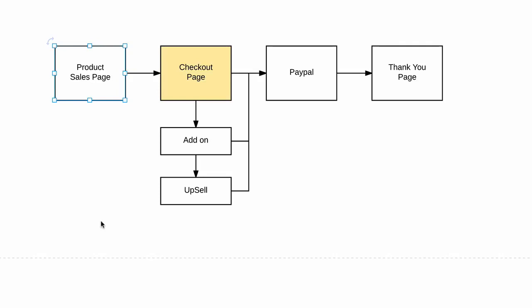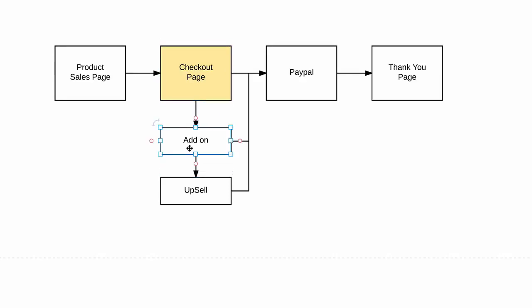The sales page is where you tell people about your product — you add all the details, what people are going to get, the pricing, and how they'll have access once they pay. When people land on that page and scroll down, there's a button to buy. Once they click it, they go to the checkout page, which is connected to your PayPal account. There are other options too — you can sell a PDF, access to a membership site with training videos, or even a one-on-one call.